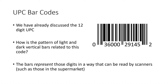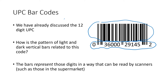We've already talked about UPC codes in terms of the numbers, so we know that this 12-digit number that we see at the bottom of the code — we understand how the different pieces of that code represent the object being scanned and how the check digit system works. But how is this pattern of light and dark bars related to that 12-digit number? The bars actually represent those digits in a way that can be read by scanners, such as those in the supermarket. It turns out that computers have an easier time reading patterns of light and dark than reading the numerals that our human eyes are better at reading.